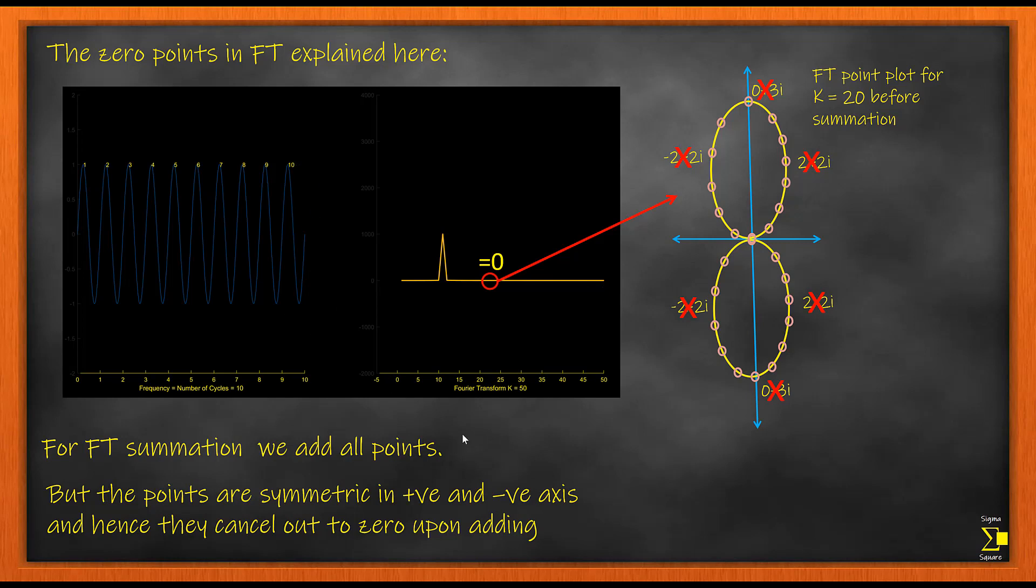except the value of k where the frequency is equal to the number of cycles equal to 10. At k equal to 10, you are getting a peak, which is also your number of cycles and can be considered as the frequency of the signal.